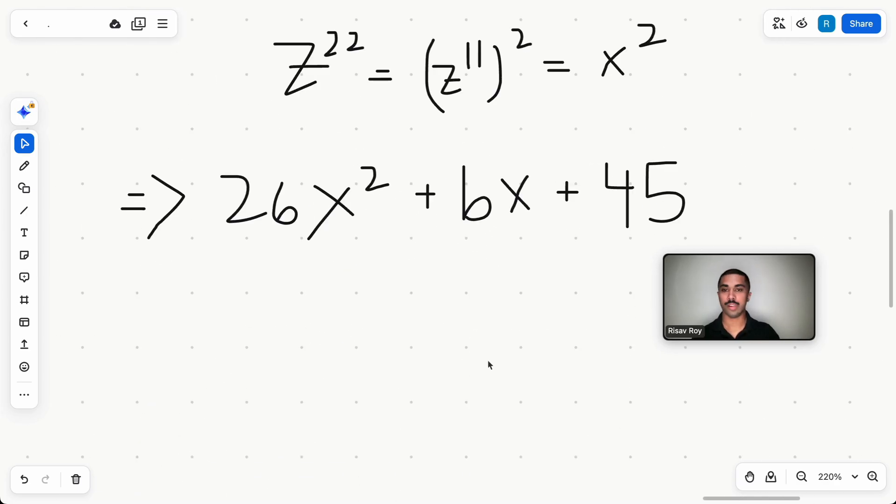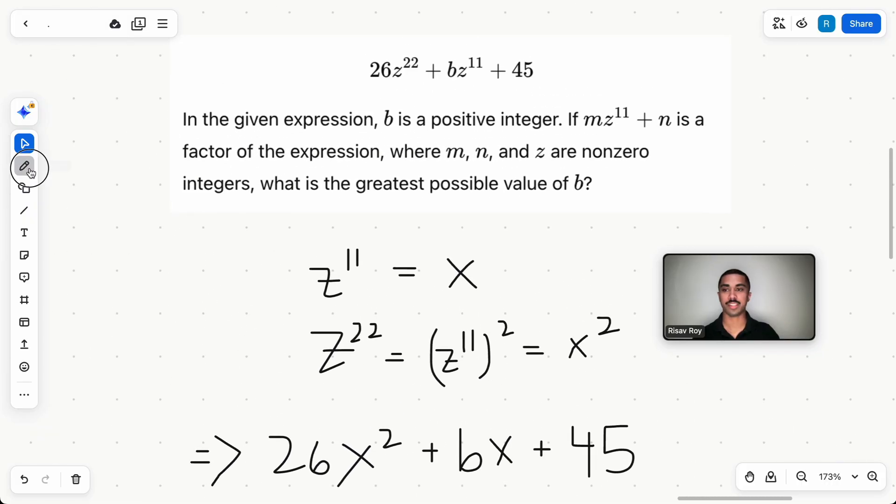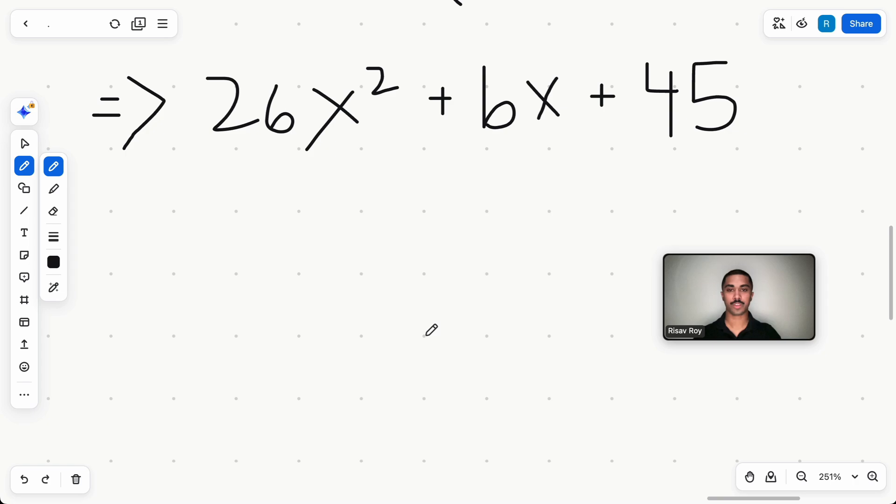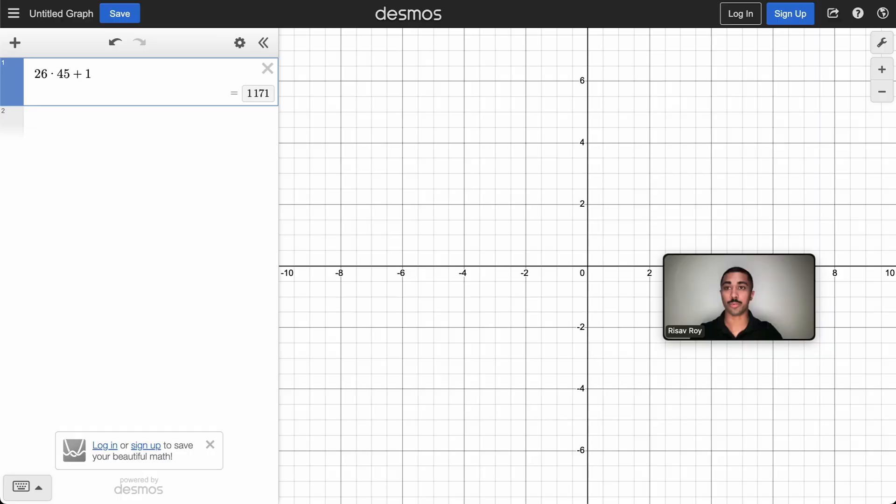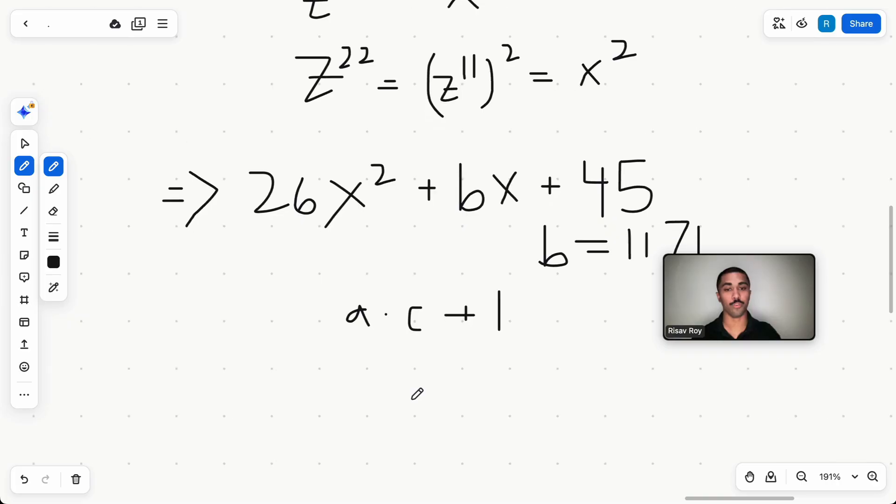And it's going to look like this. Now there's one simple trick when it comes to maximizing the b value. When you're given a and c, you just do a times c plus one. That's all it is. In this case, it's going to be 1171. That's our answer. That's the greatest possible value of b.